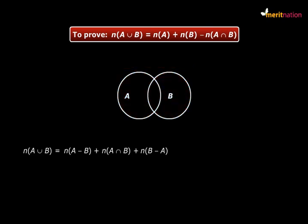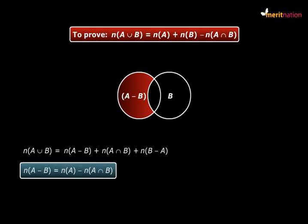So we can say that n(A union B) equals n(A minus B) plus n(A intersection B) plus n(B minus A). Now go back to the Venn diagram. Look at A minus B. We can say that n(A minus B) equals n(A) minus n(A intersection B). And we substitute this in the expression.